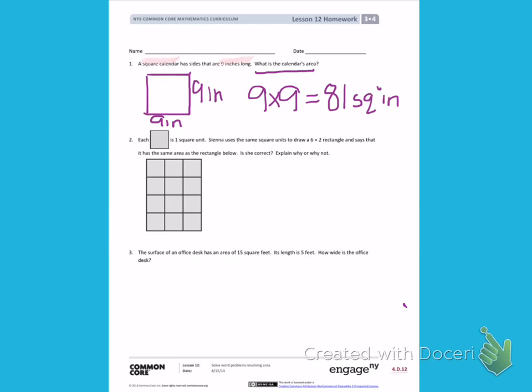So to start, I'm going to draw the rectangle that Sienna drew. Her rectangle has the side lengths 6 and 2. So I'm going to draw that rectangle here. Making sure one side is going to show 2 units, and one side is showing 6 units.